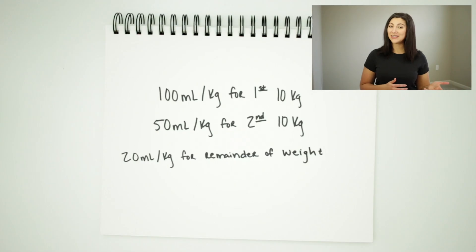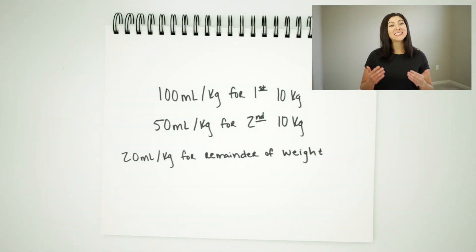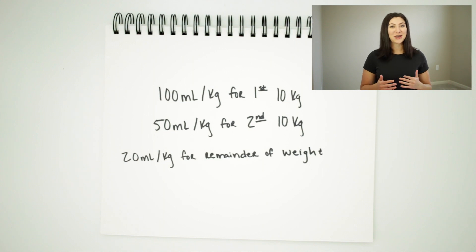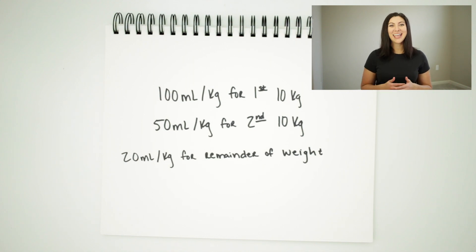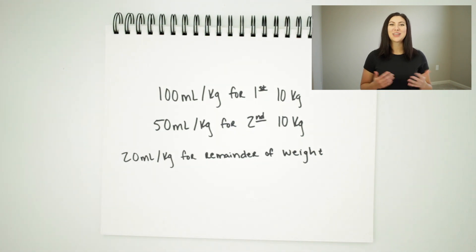To calculate your patient's maintenance IV fluid rate, you will need to know their weight. The formula is 100 milliliters per kilogram for the first 10 kilograms, 50 milliliters per kilogram for the second 10 kilograms, and for the rest of their weight it will be 20 milliliters per kilogram.